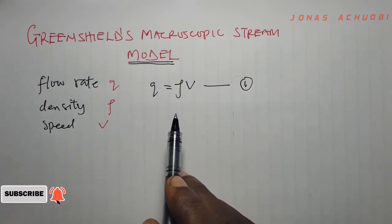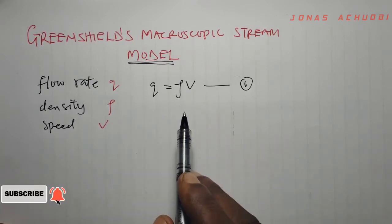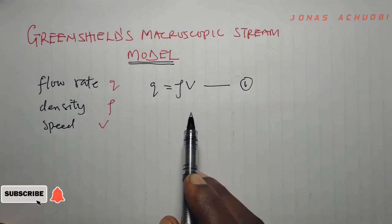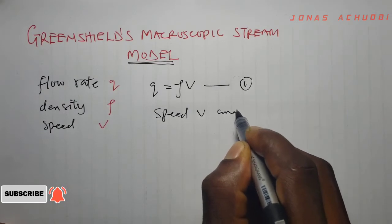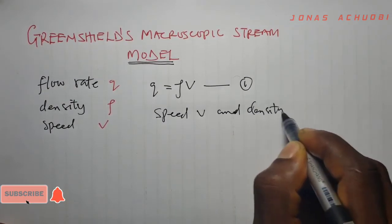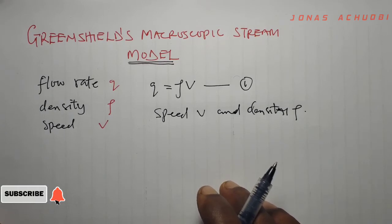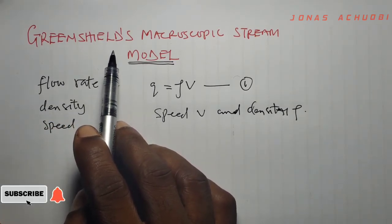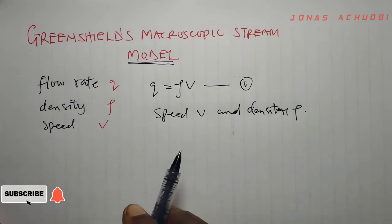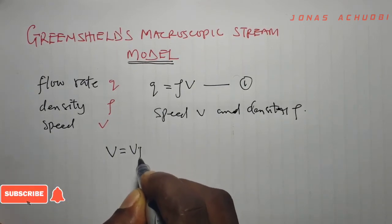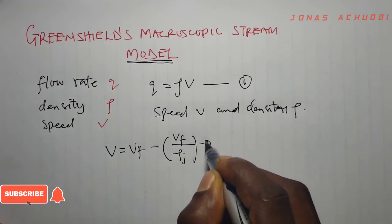Macroscopic stream models represent how the behavior of one parameter of traffic flow changes with respect to another. The most important relation is between speed V and density ρ. The first and simplest relation between speed and density is proposed by Greenshield, who assumed a linear speed-density relationship given by: V = VF − (VF/ρJ)·ρ. We call this equation 2.